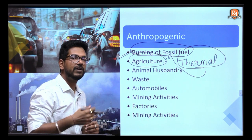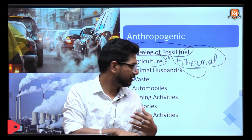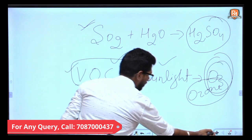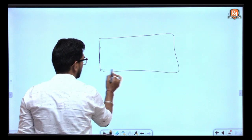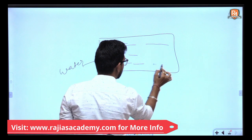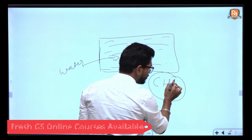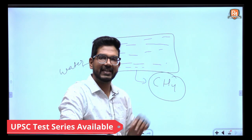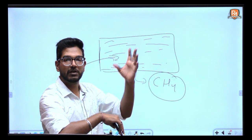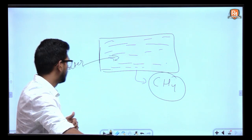If we talk about agriculture, for example, paddy cultivation creates anaerobic conditions. When a field is filled with water and the land is submerged, this anaerobic condition results in the release of methane gas. Animals also produce methane gas, so animal husbandry can also be a reason. Not every agricultural activity produces air pollution, but some do — relate it to anaerobic respiration in paddy fields.